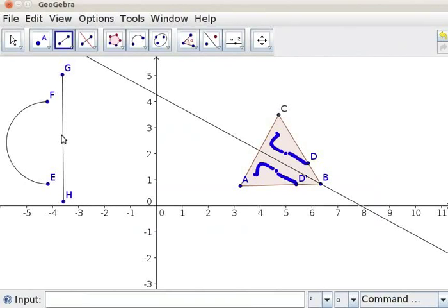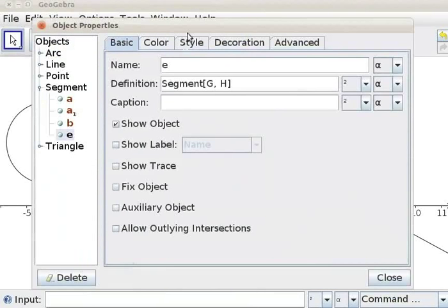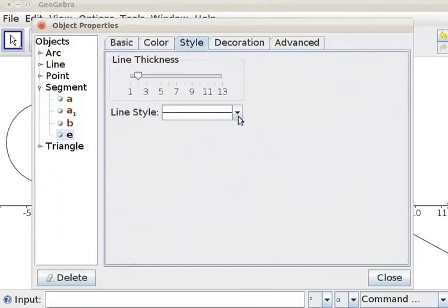Let us change the property of the line. Right-click on the line, Object Properties. Click on Style. Change Style.